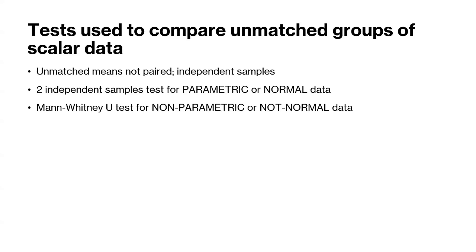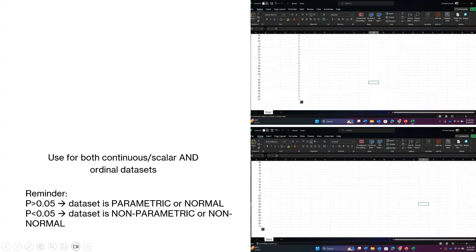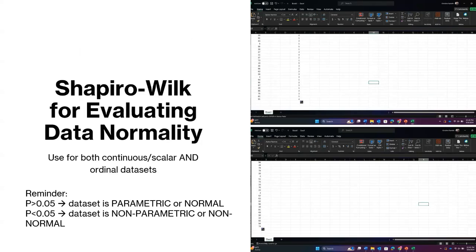Depending on the normality of the data — which you determine using Shapiro-Wilk's test — your data set can be parametric or non-parametric, and there are separate tests for each. For parametric data, if the Shapiro-Wilk's test result is greater than 0.05 meaning the data set is normal, you can use the independent samples t-test. This has to be true for both data sets. If either one comes back not normal, you must use the non-parametric alternative, which is the Mann-Whitney U test.